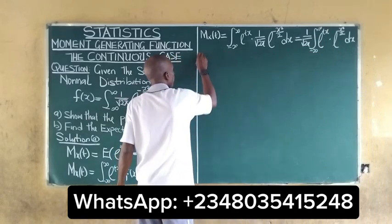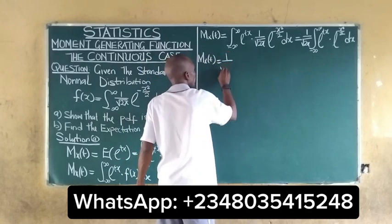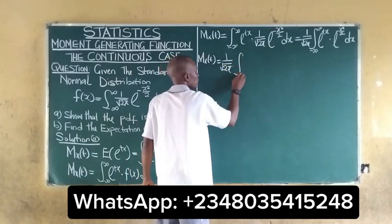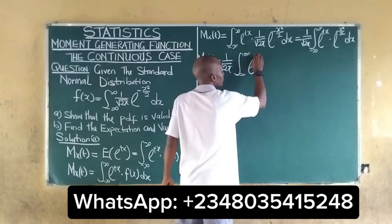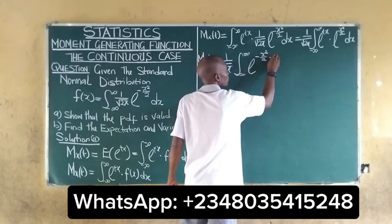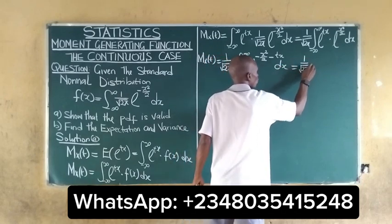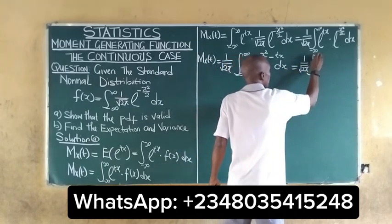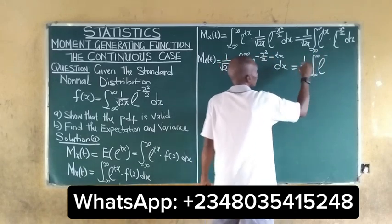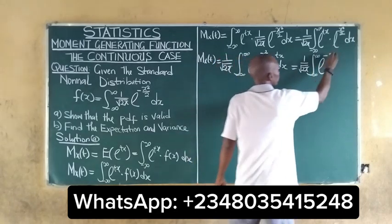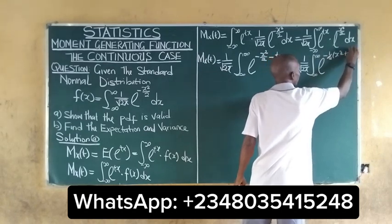We can rearrange this. The moment generating function becomes 1 over the square root of 2π times the integral from negative infinity to infinity of e raised to the power of negative one-half times x squared minus tx, dx.